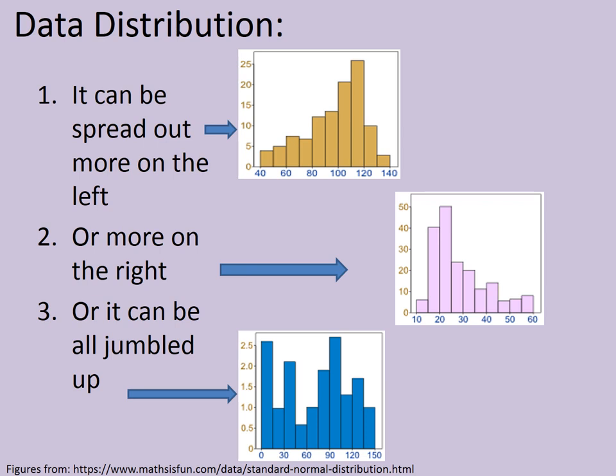In the second example, when data is spread out more on the right — the MCQ test is too tough — most students score 10, 20, 30, or 40 marks and very few score above 60 or 100. And if some students find it easy while others find it difficult, the data can be all jumbled up, as seen in the third figure.